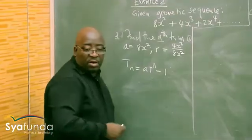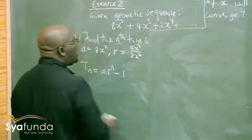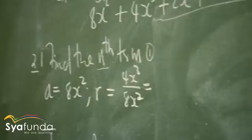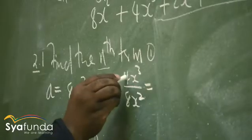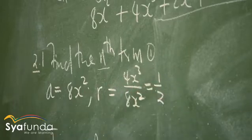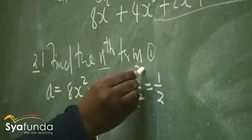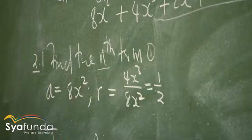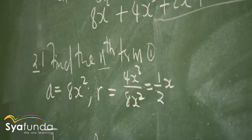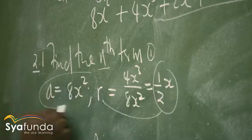We can simplify that: 4 goes into 8 twice, giving us 1 over 2. Then x cubed over x squared — subtract the exponents — gives x to the power 1. So the common ratio is x over 2, or half x. That is the common ratio we'll be using here. This is our common ratio and this is our first term.